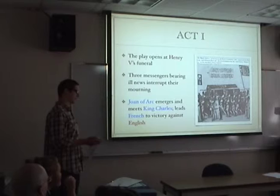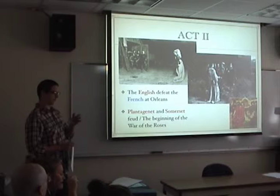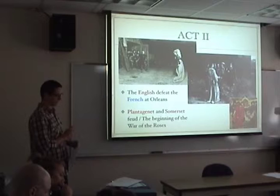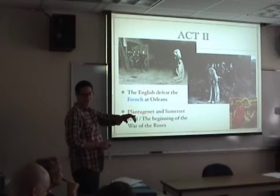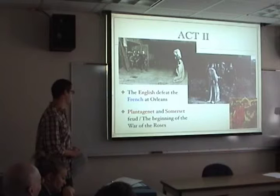In Act 2, the English then defeat the French at Orleans and retake the city. Then Plantagenet and Somerset, back in England, begin a long-standing feud between two families: the House of York and the House of Lancaster. This is the beginning of the War of the Roses — essentially this is the Council of Elrond scene that launches everything.